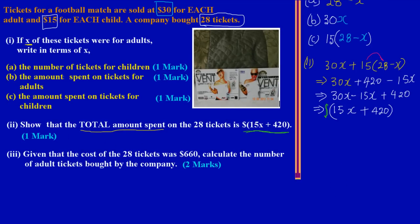Now in part 3, they gave us a statement — given that the cost of the 28 tickets was $660, we're asked to calculate the number of adult tickets bought by the company. If you notice, they have given us the total amount in money value: $660. In part 2, the expression we derived represents the total money spent, so since they gave us the actual dollar value, we can equate the expression to that value.